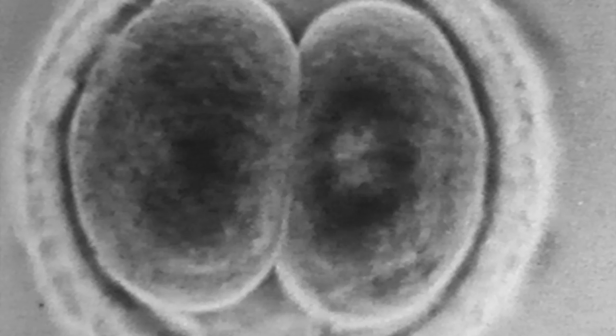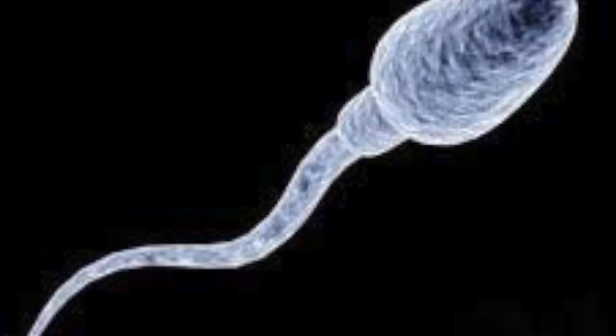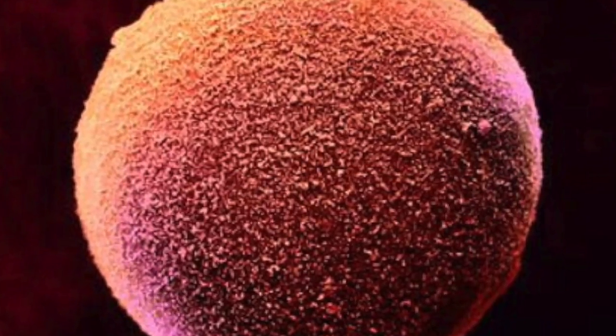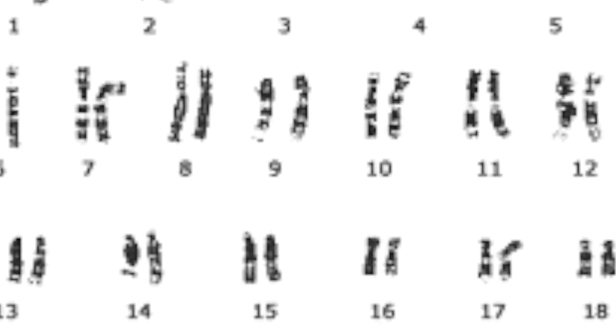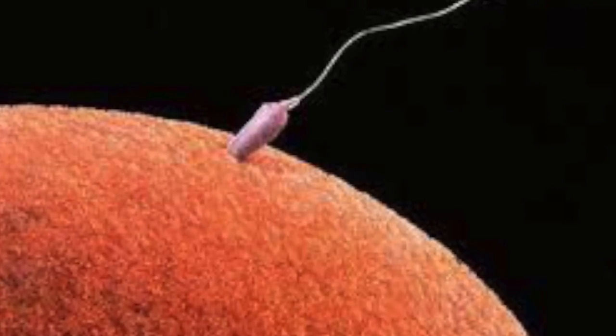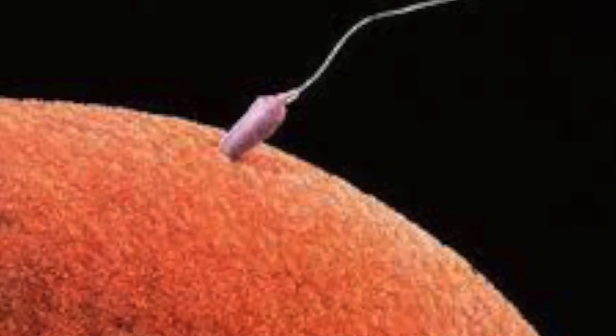The zygote stage is during the first four days of fertilization. This stage begins with two components: the sperm and the egg. Each of these cells has 23 chromosomes. Once these two cells combine, this is called fertilization, and where the zygote stage begins.